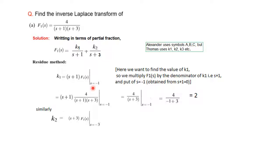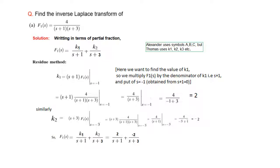Similarly we can find K2. To find K2 we multiply F1(S) by (S+3), and the condition changes: S+3=0 means S equals minus 3. Plugging in the value of F1(S), cancelling like terms, and putting S=−3, we get K2 equal to minus 2. So F1(S) can now be written in partial fraction form as 2 divided by (S+1) minus 2 divided by (S+3).